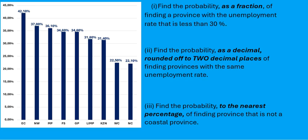It would only be these two provinces. So that's two provinces. Remember, we always put the probability as a fraction first and we always put it over the total of all possibilities. We've got a total of nine provinces, so two out of those nine provinces have an unemployment rate that is less than 30%. We were asked to write this as a fraction, so we can leave it as 2/9.